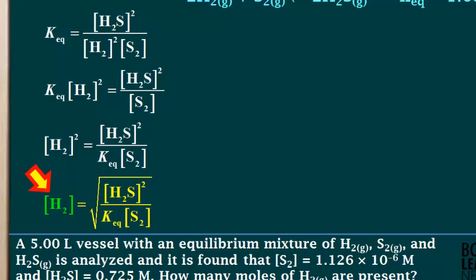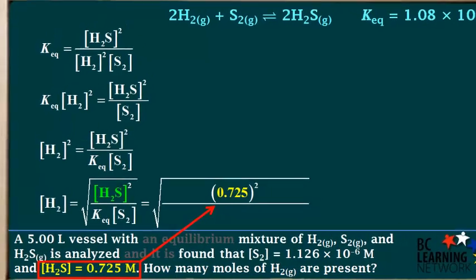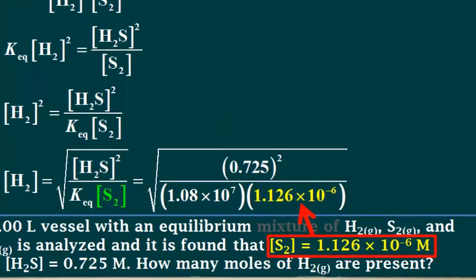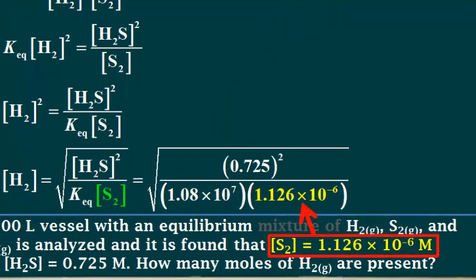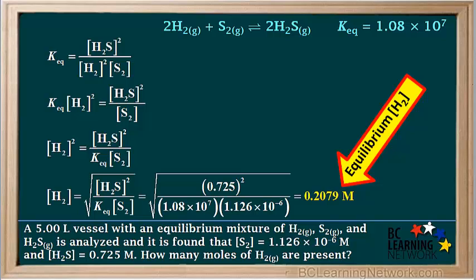We can find the value for the concentration of H₂ by substituting in the given values. The concentration of H₂S is 0.725 molar — don't forget that it's squared. The value for K_eq is 1.08 times 10 to the seventh, and the concentration of S₂ is 1.126 times 10 to the negative 6 molar. Pause the video and try this calculation on your calculator. The answer should come out to be 0.2079 molar, which is the equilibrium concentration of H₂.